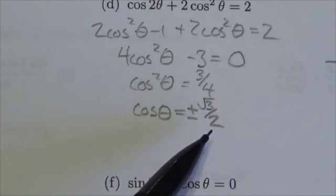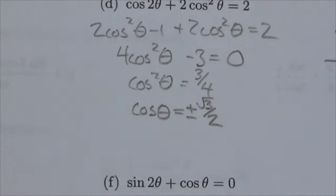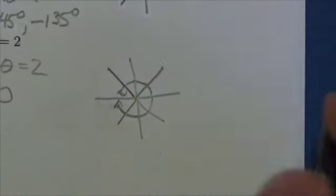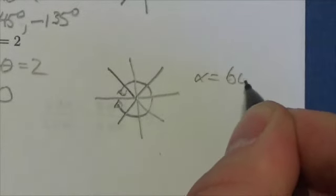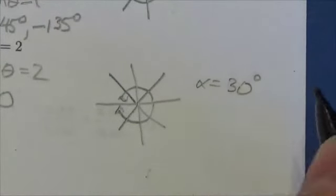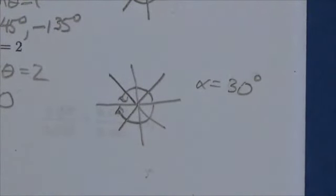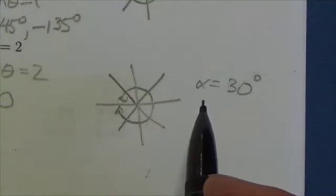The root three over two, now I've got to think, okay, where along the unit circle, where in the special triangles does the cosine ratio become root three over two? And hopefully, it doesn't take you too long to see that that's going to be 60 degrees. And by 60 degrees, I mean 30 degrees. What was that all about? Sorry. 30 degrees. Okay. So now, let's just put it in the quadrants here.